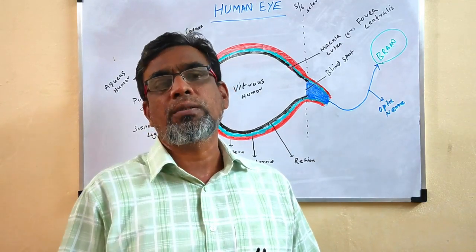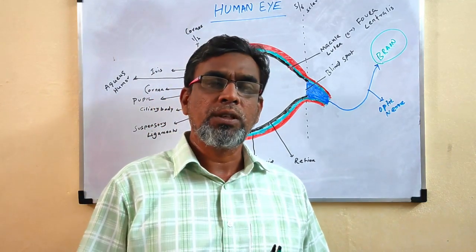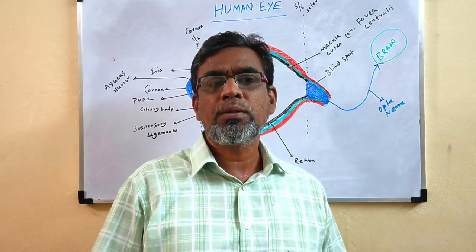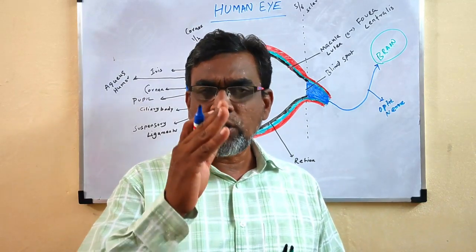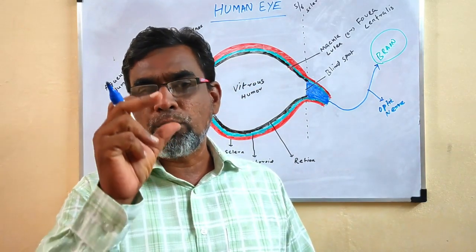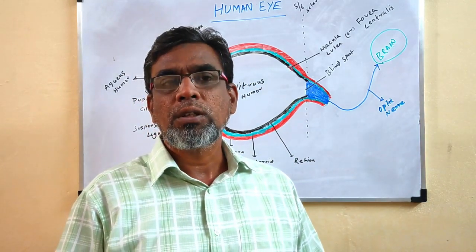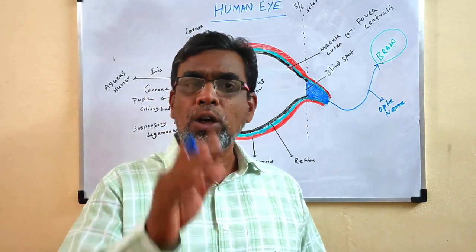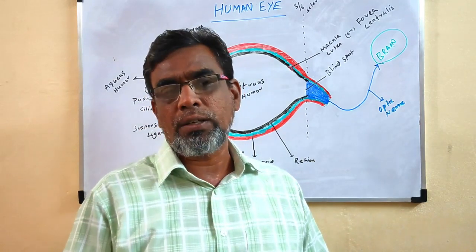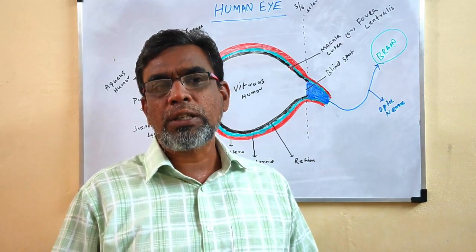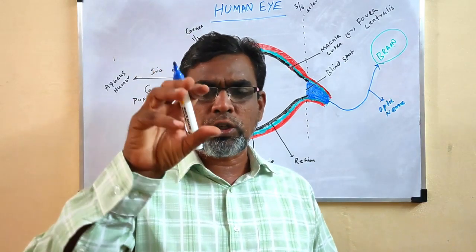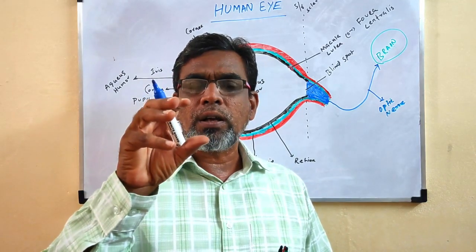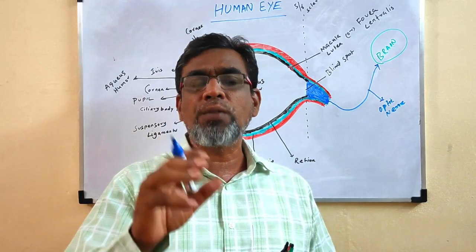The eye is an organ of vision. We have a pair of eyes, spherical in shape. Where are the eyes located? They are located in the orbit of the skull bone. There is a socket in the skull bone called an orbit, and in this orbit the eye is located. This eyeball has various features and different structures.